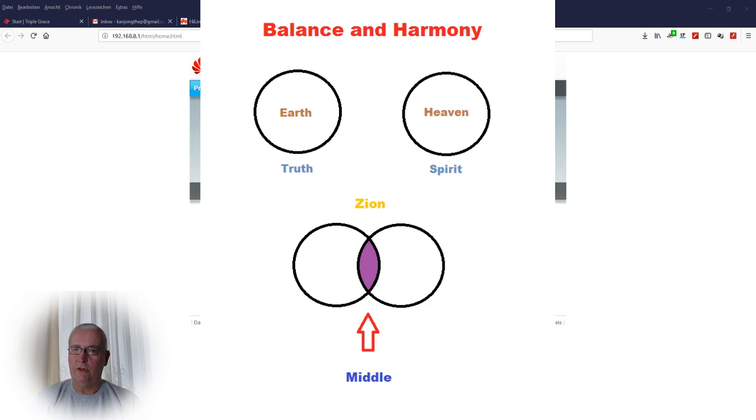I made an image for you to understand. It's called balance and harmony. You see, on the left side is the earth, a circle representing the earth. And on the right side, you see a circle representing heaven. The earth, under it, is written truth, and on the other side is written spirit. This is the usual situation that we have. There is a separation between heaven and earth.